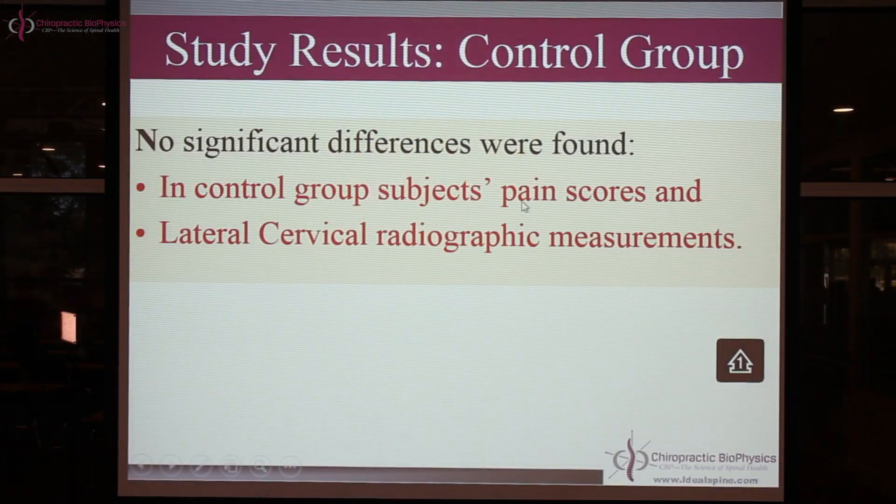Study results: no differences were found in the control group's pain scores and cervical curves — it doesn't change on its own. Chronic pain doesn't get better on its own. A 2005 study in the journal Pain from a Finnish population of thousands of metal workers found that the majority still had chronic back and leg pain 25 years later. In the treatment group, we showed 75% improvement in chronic neck pain intensity, which we believe is because we improved the cervical curve.